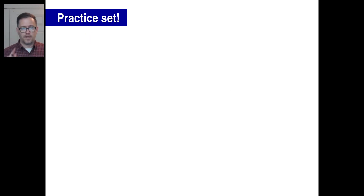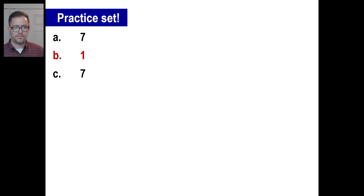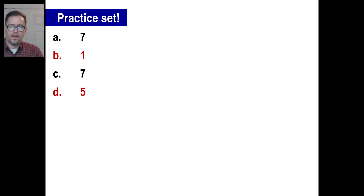Let's try the practice set. Try A and then come back when you're done. A will be seven — make sure that's correct. Try B now — B is one. Pause it, try C — C is seven. Pause it and try D — D is five. That's it. Work on those, make them real simple for yourself, and I'll see you guys next time. Have a good day.